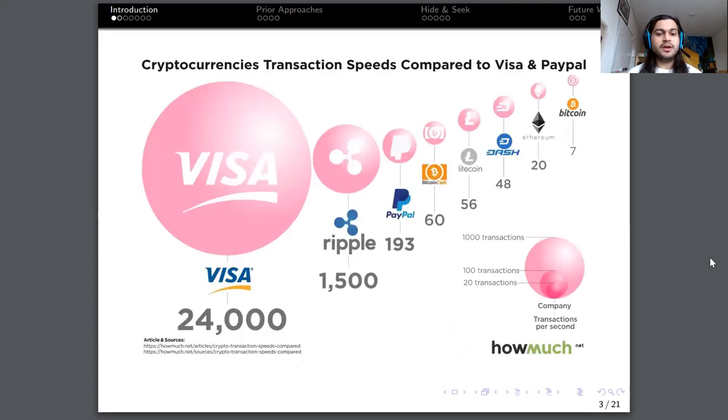So the main motivating problem can be seen from this chart over here. The transactions per second throughput of Bitcoin, as well as other popular cryptocurrencies, is orders of magnitude lower than that of Visa, because Visa can process thousands of transactions per second, whereas the others, as you can see, are below 100.